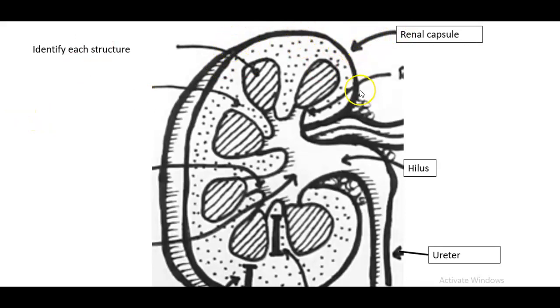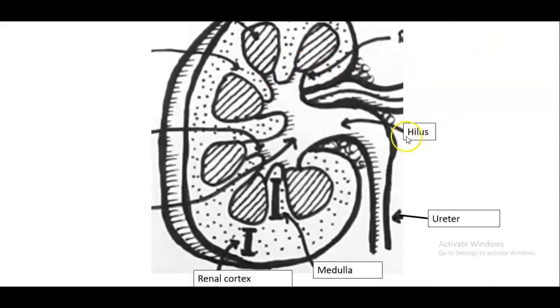So we'll go through each of them. So each structure on the outside, we have the renal capsule, which is that protective membrane of the kidney. And then working our way down, we have the hilus, which is that funnel shaped area of the kidney that collects the products, which essentially is urine at this point and empties it into the ureter.